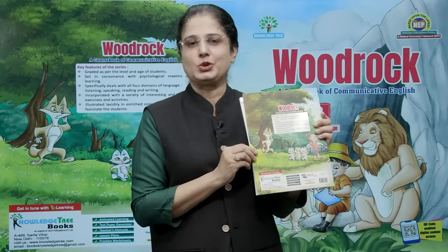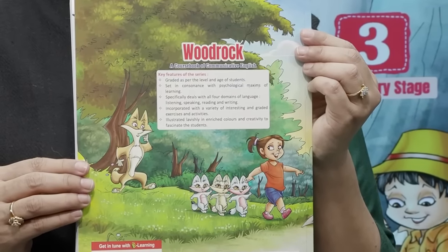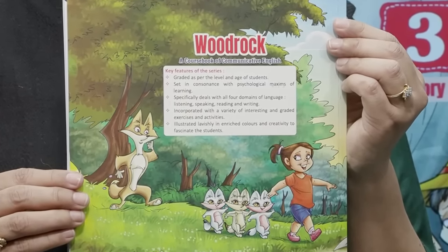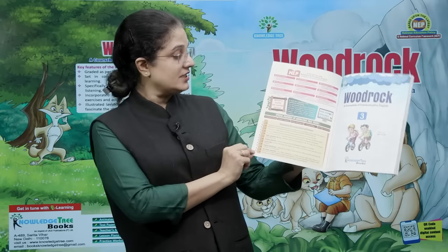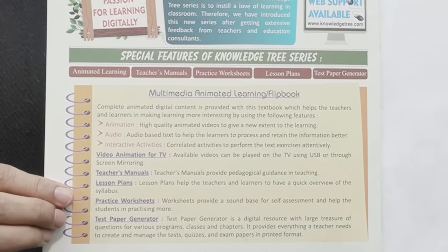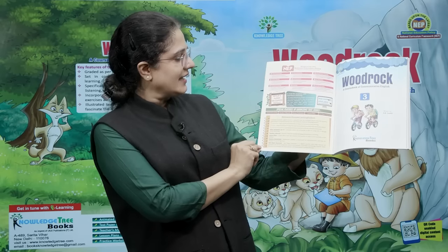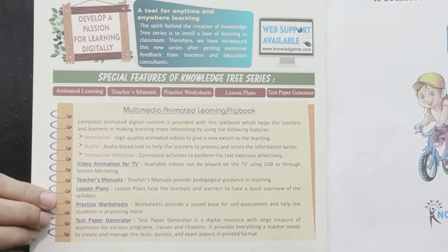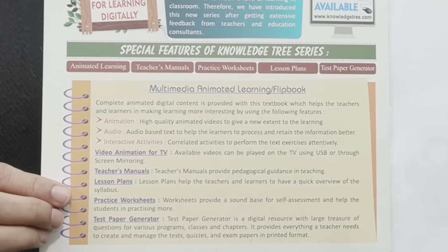Now let us look at the key features of this communicative English course book. It specifically deals with all four domains of language — that is, listening, speaking, reading, and writing. An important feature of the series is that it is a multimedia animated learning flipbook, with complete animated digital content provided alongside the textbook, making learning more interesting.